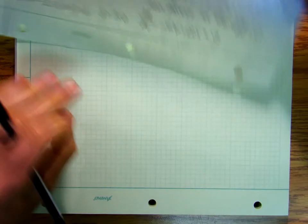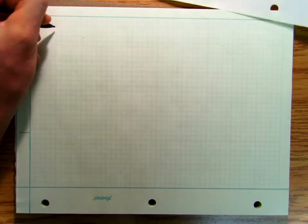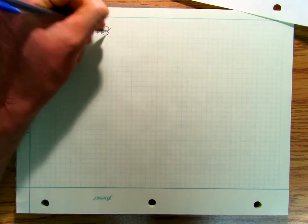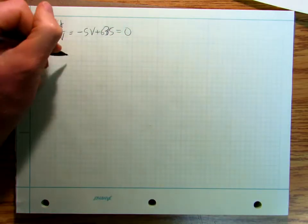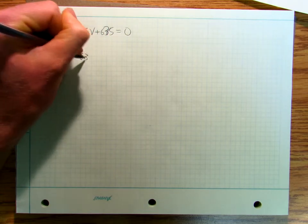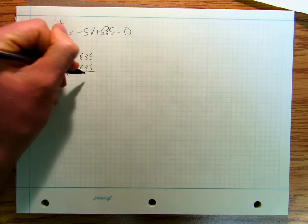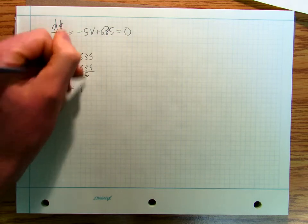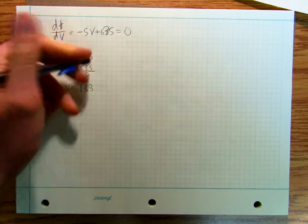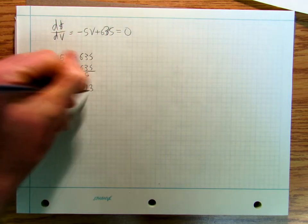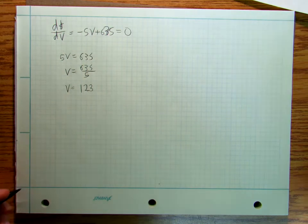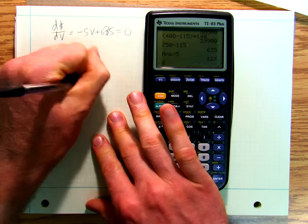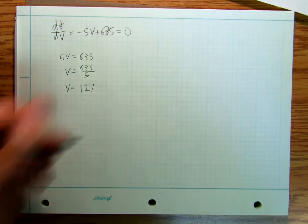Let's not crowd it down. So now put that up there, let's just copy it over. So I've got 5V is equal to 635, V is equal to 635 divided by 5. So that means that I've got V equals, let's see, 635 divided by 5, 127. So 127 sweaters.